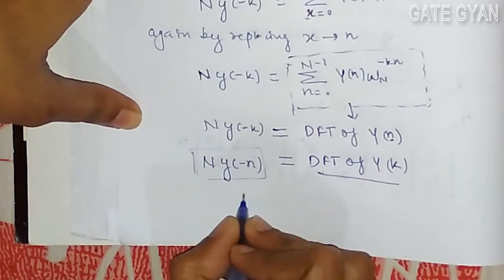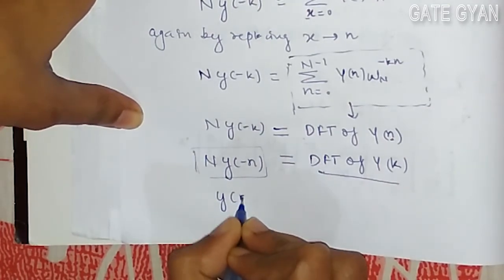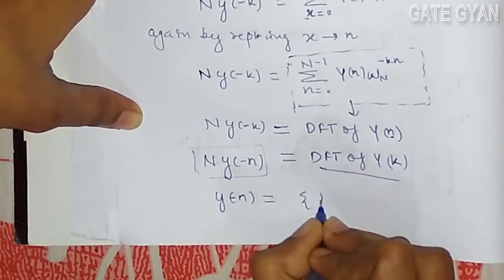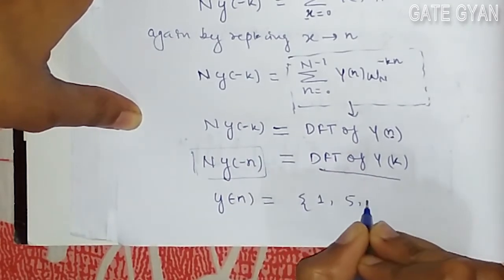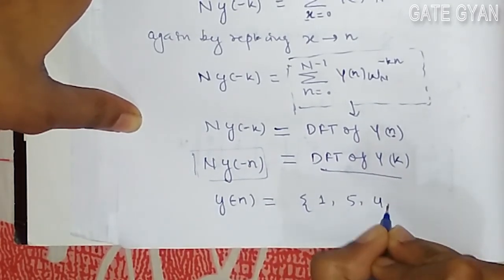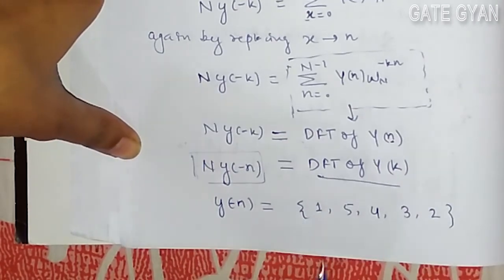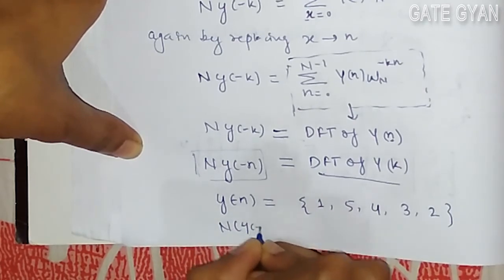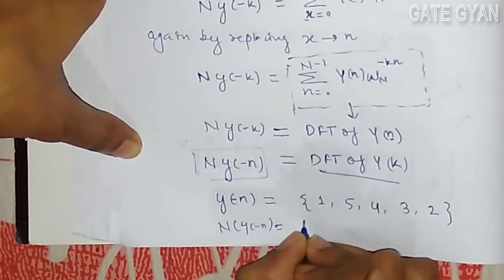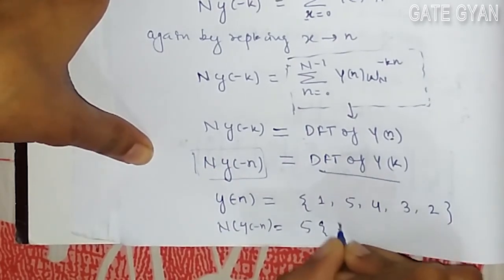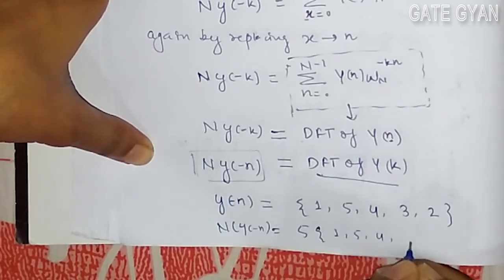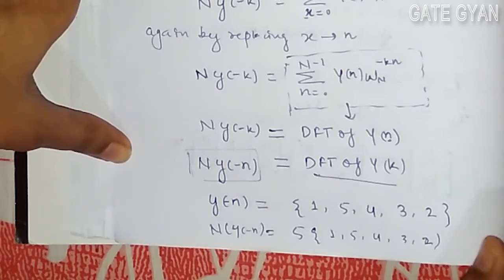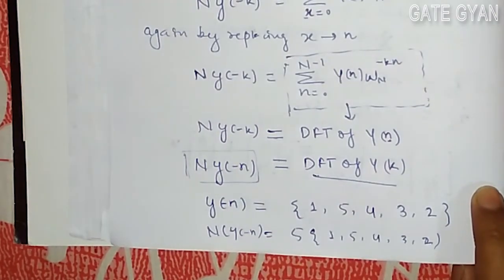Now I can get the final answer. Since y[n] = {1, 2, 3, 4, 5}, y[-n] will become {1, 5, 4, 3, 2}. This is a 5-point DFT so N=5, and N·y[-n] = 5 times {1, 5, 4, 3, 2}. The answer is option C. Thank you.